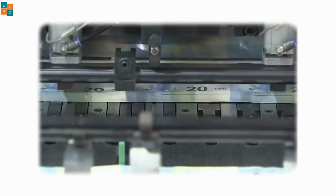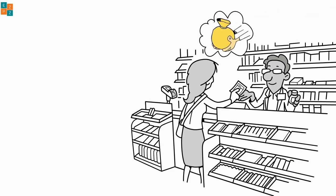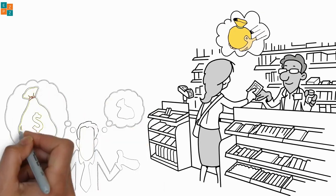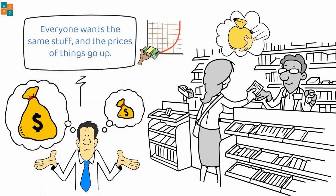When there's too much money, people start to buy more things because they have lots of money. But here's the problem: there aren't suddenly more things to buy, so everyone wants the same stuff and the prices of things go up.